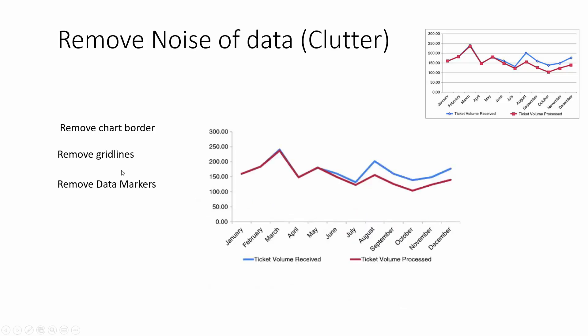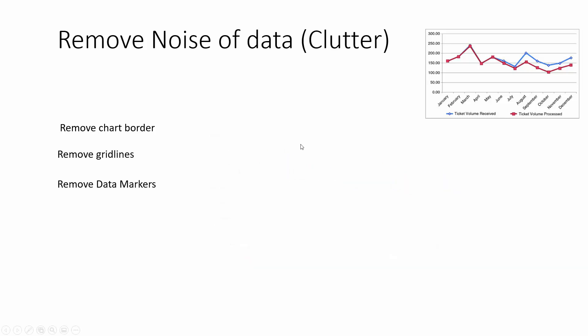The next one is to remove data markers. As you can see in the first chart, we have data markers at each spot where the chart goes up and down. This can be helpful when you do anomaly detection because it specifies that point, but we don't need it for most scenarios so it's not necessary to have it. So let's remove it.